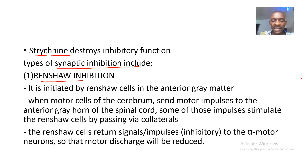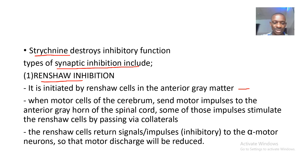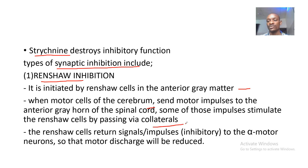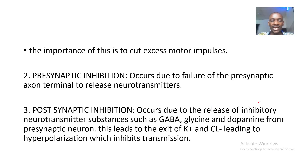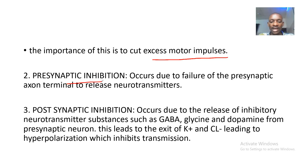First we have ventral inhibition, initiated by the ventral cells in the anterior gray matter. When motor cells of the cerebrum send motor impulses to the anterior gray horn of the spinal cord, some of these impulses stimulate the ventral cells by passing via the collaterals. The Renshaw cells return signals and impulses to the alpha motor neurons so that the motor discharge will be reduced — this is inhibition caused by the Renshaw cells, and its importance is to limit excess motor impulses.